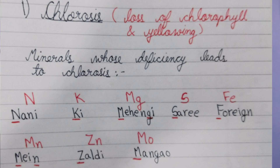From the word 'nani,' we take N for nitrogen. 'Ki' gives us K for potassium. 'Mehengi' gives M for magnesium. 'Saari' gives S for sulfur. 'Foran' gives F for Fe, that is iron. 'Mein' gives M and N for manganese. 'Jaldi' gives Z for zinc. And 'mangao' gives M, which hints at molybdenum. So the mnemonic 'Nani ki mehengi saari foran mein jaldi mangao' covers the minerals: nitrogen, potassium, magnesium, sulfur, iron, manganese, zinc, and molybdenum.